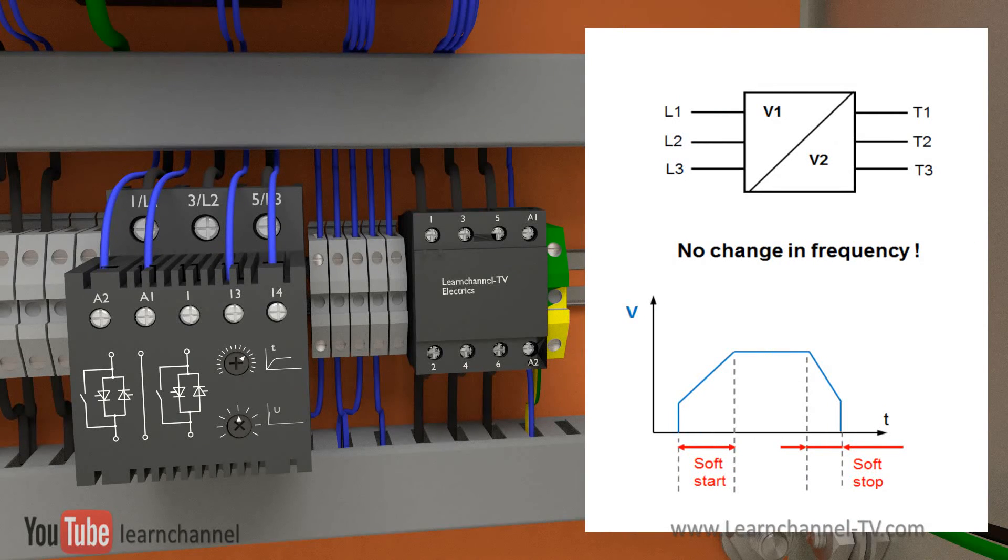On starting, a soft starter supplies the motor with a rising voltage ramp, but at mains frequency, typically 50 or 60 Hz. In other words, the output frequency is always the same as the input frequency.